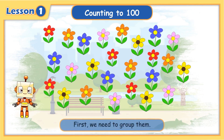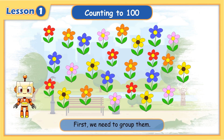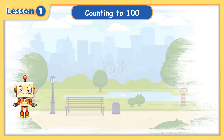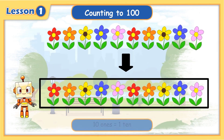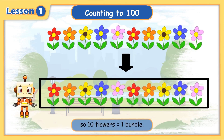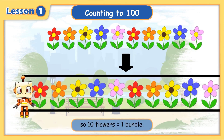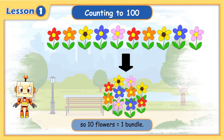First, we need to group them. 10 ones equals 1 ten. So, 10 flowers equals 1 bundle.